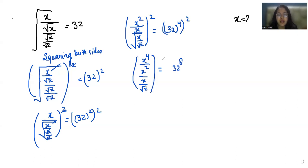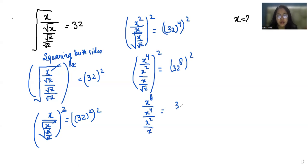Again squaring both sides. So x to the power 8 divided by x to the power 4, divided by x squared, divided by x, is equals to 32 to the power 8 times 2, which is 16.